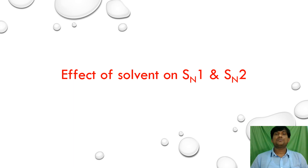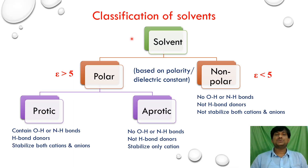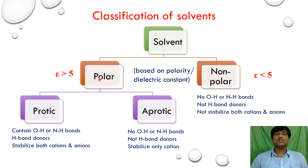Solvents are classified into polar and non-polar solvents based on their polarity or dielectric constant. If the dielectric constant value is greater than 5, the solvent is called a polar solvent. If it is less than 5, the solvent is called a non-polar solvent. Polar solvents are further classified into protic and aprotic solvents.